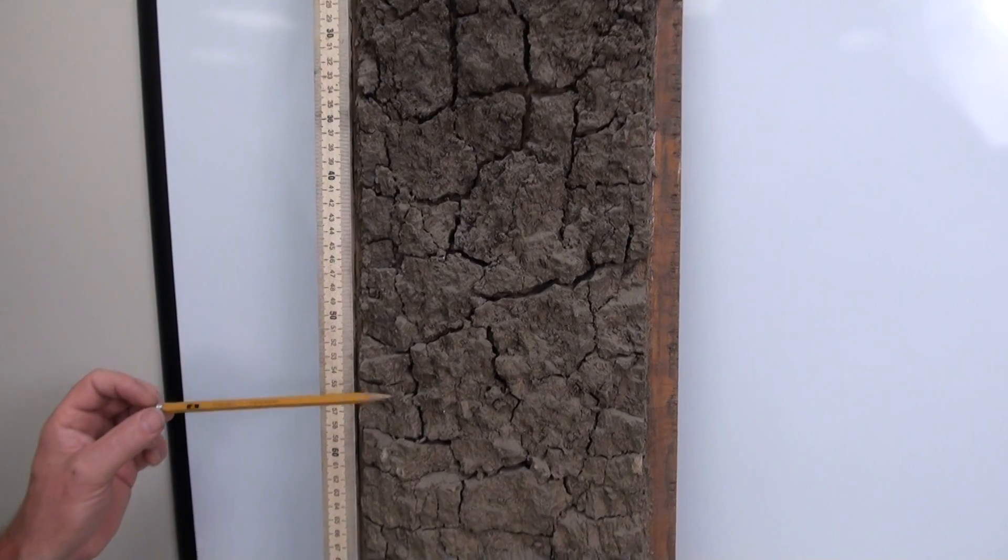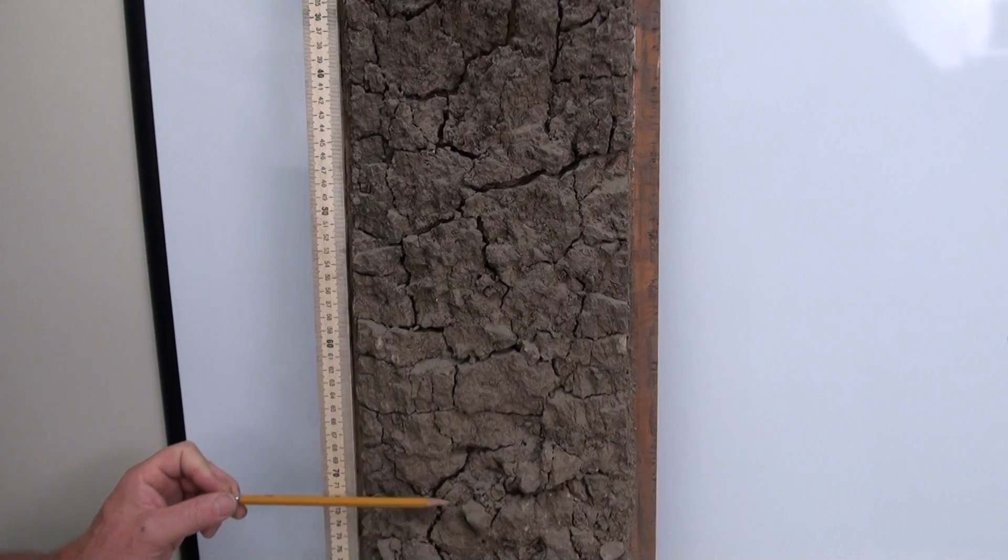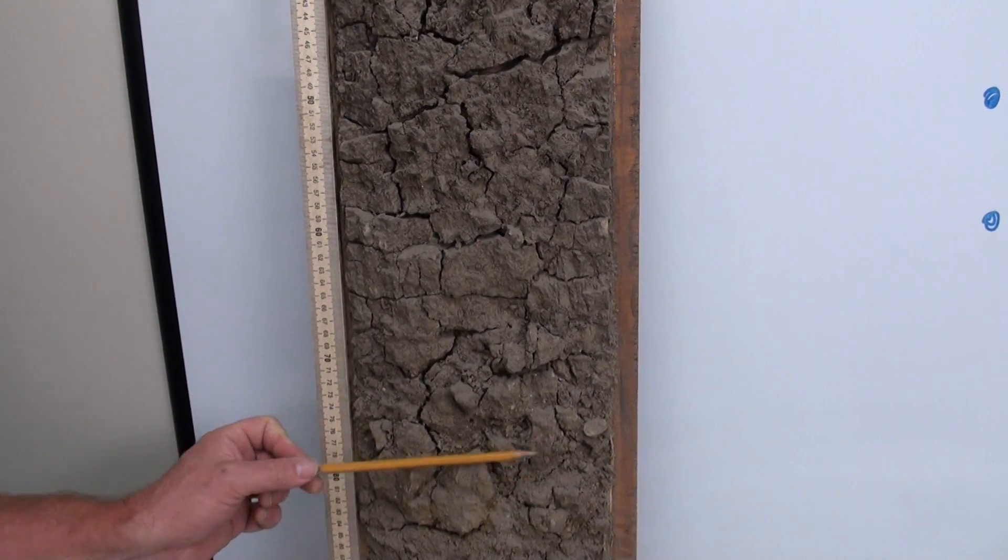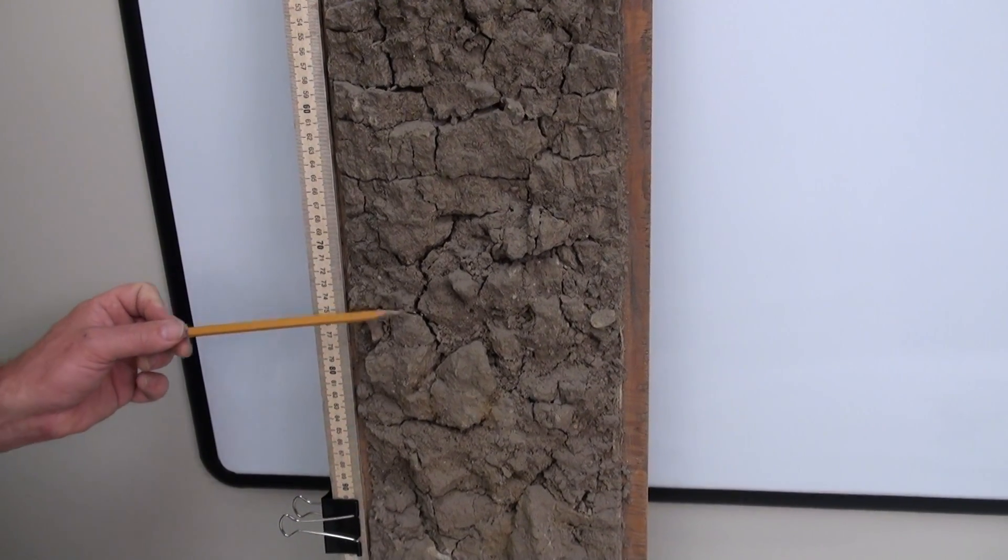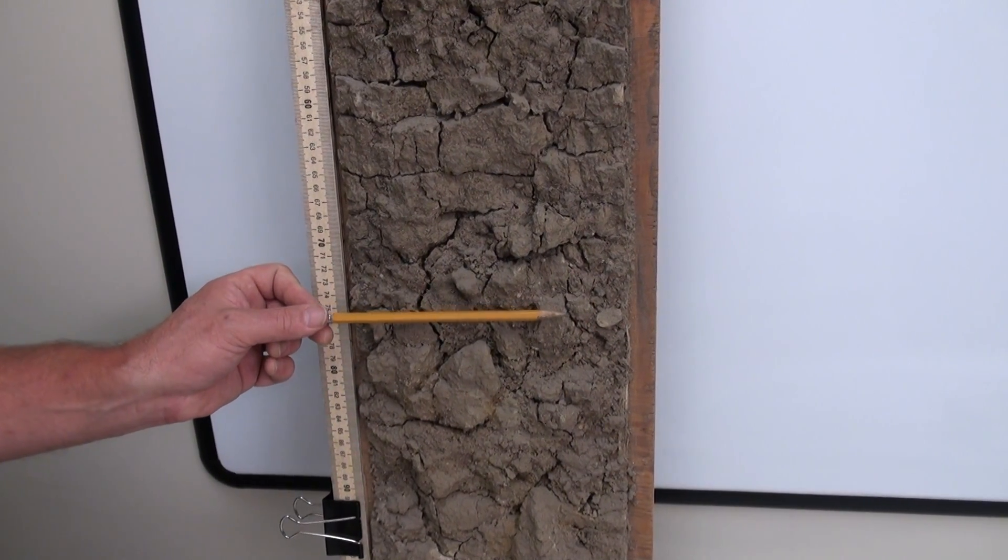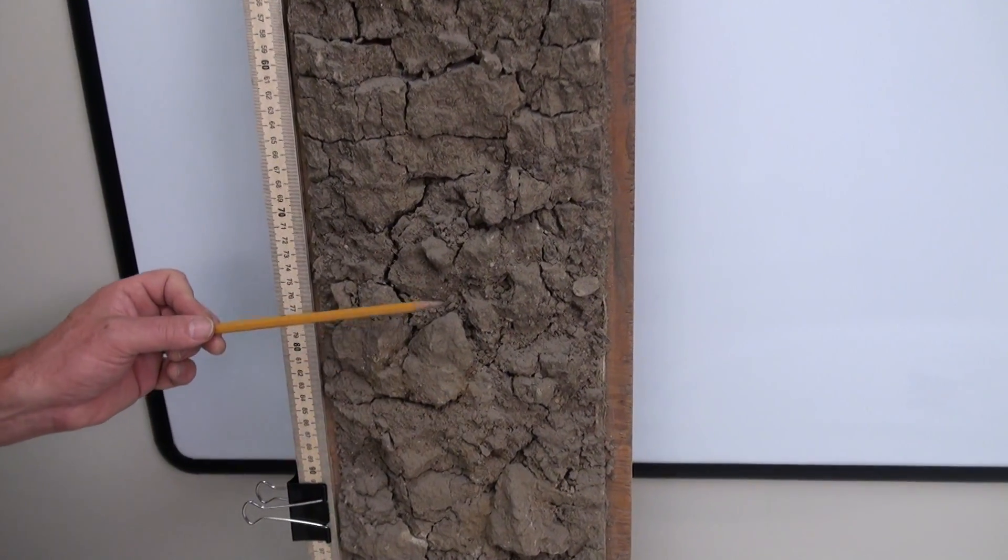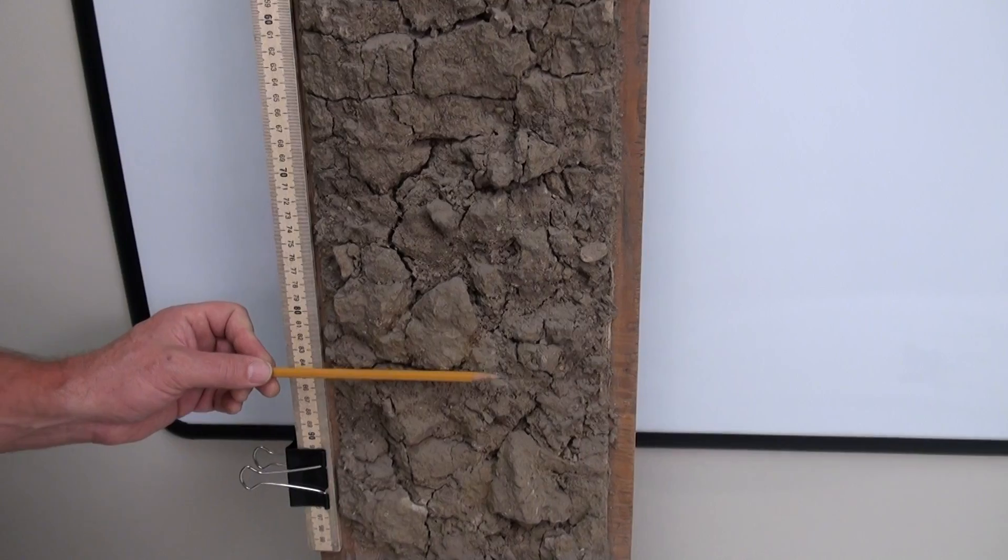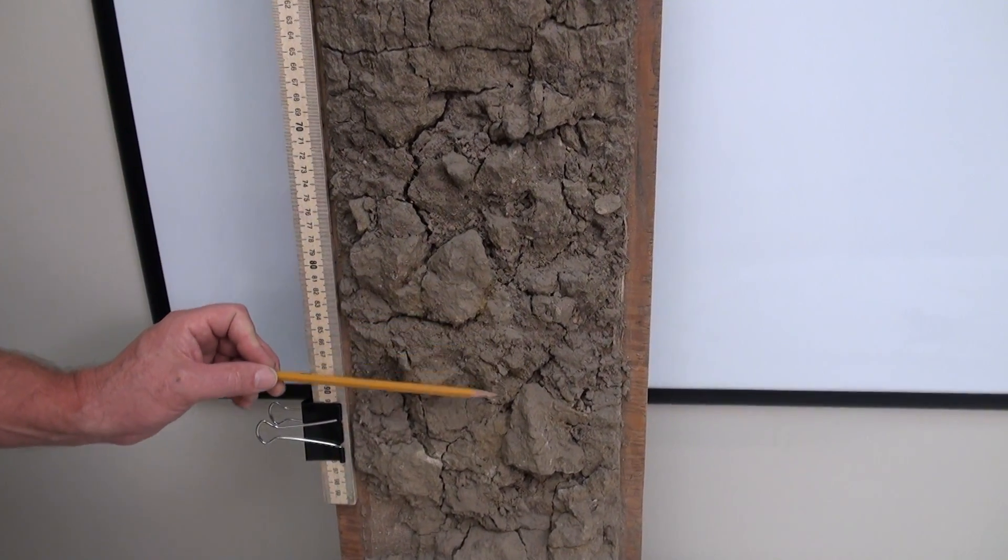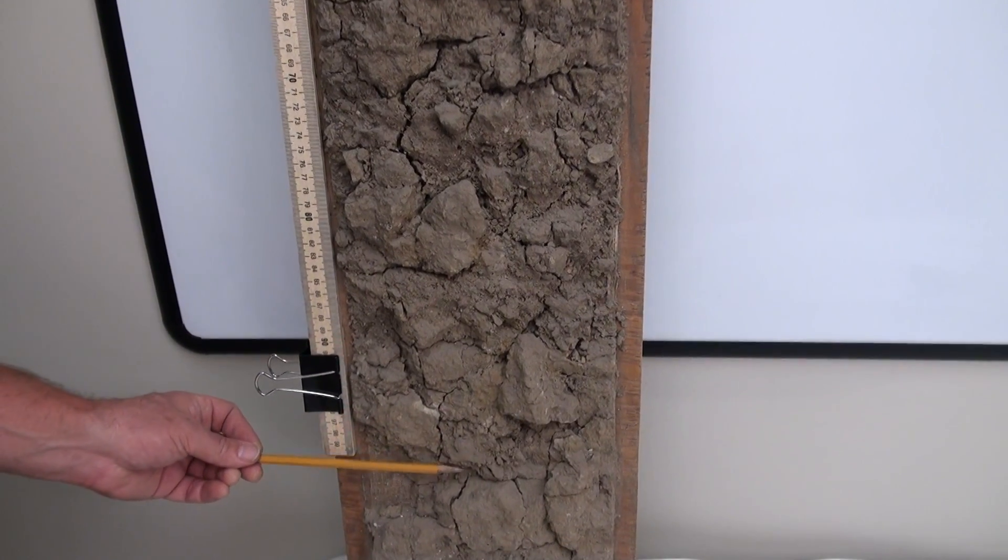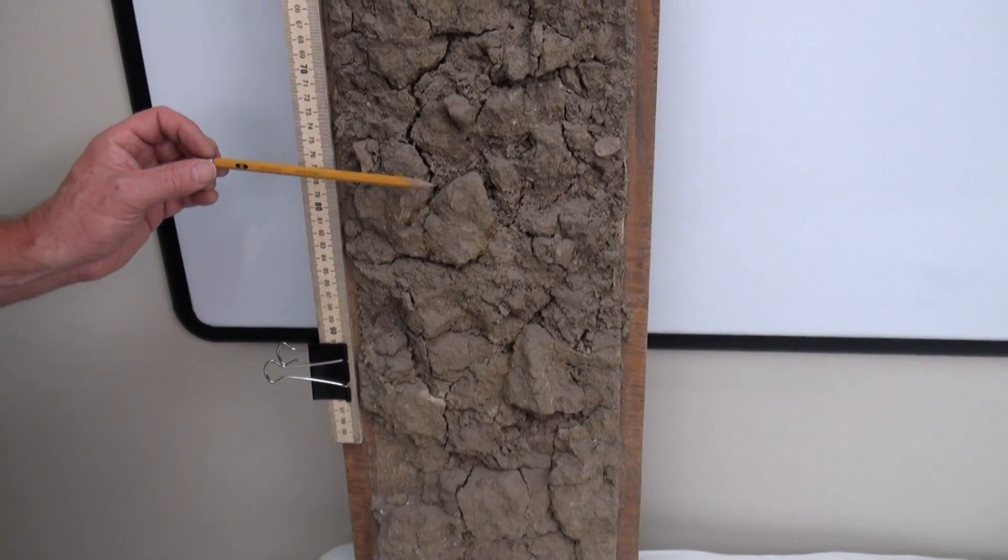We've still got a chunky blocky structure here, 55 down to, we see a definite difference in consistency here at 75, and 77. We have much more massive, larger aggregates and continuing with the lighter gray color, moving downward from 75 right on down to 90. I would give that the third B horizon.